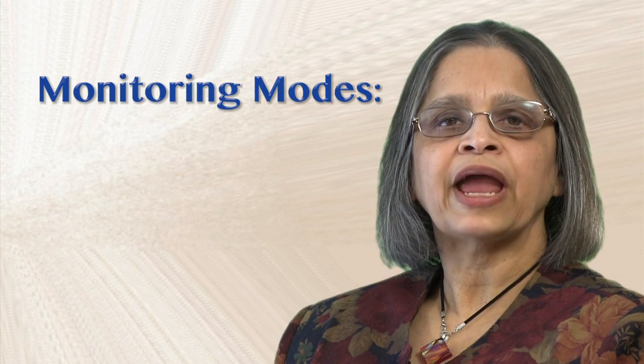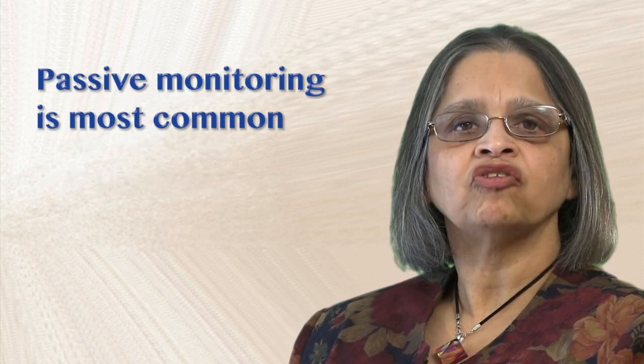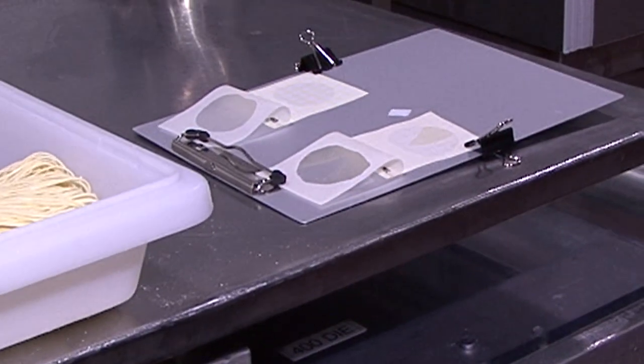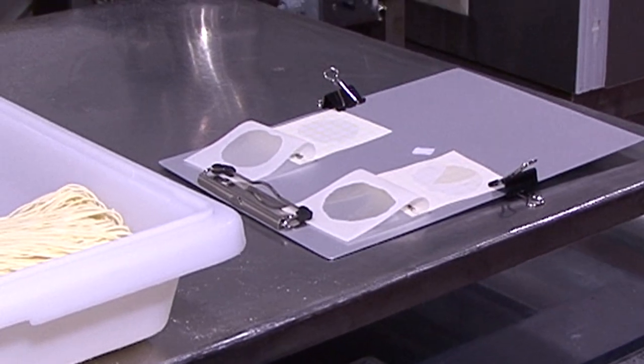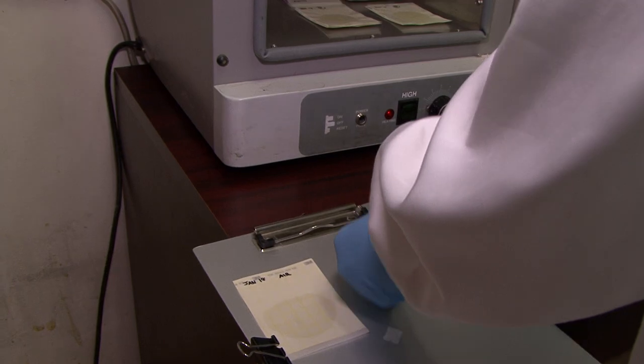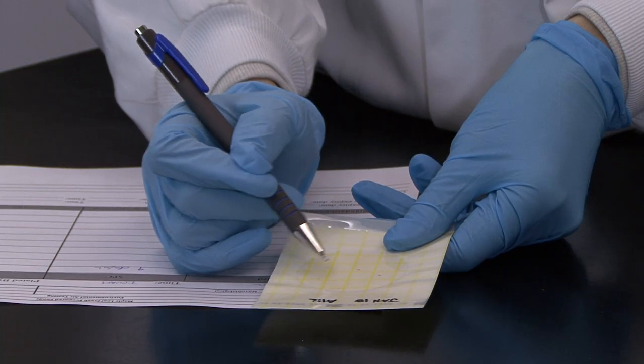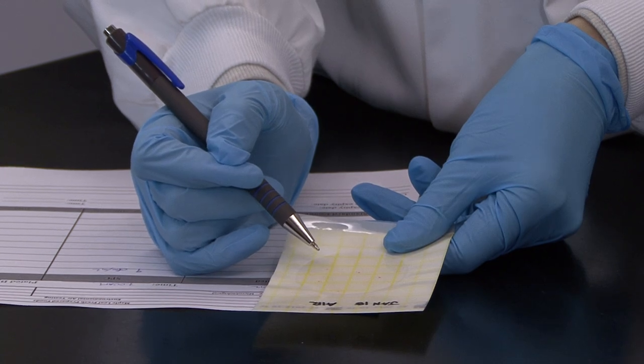There are two principal air monitoring modes: active and passive. Passive monitoring is most commonly used. Settle plates or air plates are exposed to the air for 15 minutes. The film or plates are then placed in incubators to allow the organisms to grow. On the plus side, this is an inexpensive method and it's easy to do. On the downside, your sample is based on just those microorganisms that have sedimented out of the air and landed on the film surface.